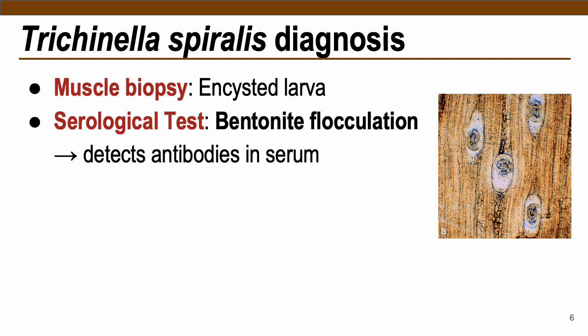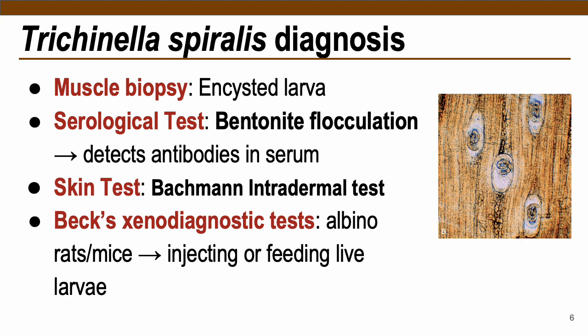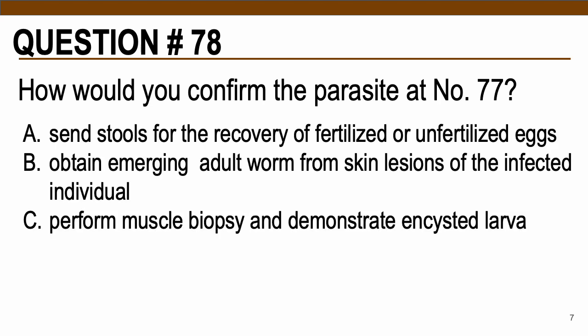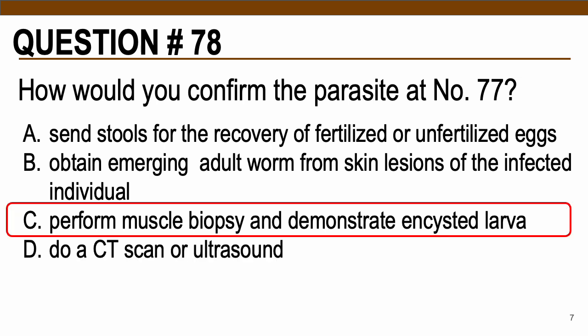We can also use serological and immunological testing, such as the bentonite flocculation test and Bachman intradermal test. We can also use, for research purposes, the Bach's xeno-diagnostic test. Question number 78: How would you confirm the parasite at number 77? We are pertaining to Trichinella spiralis. The best choice is letter C — perform a muscle biopsy and demonstrate the encysted larvae.